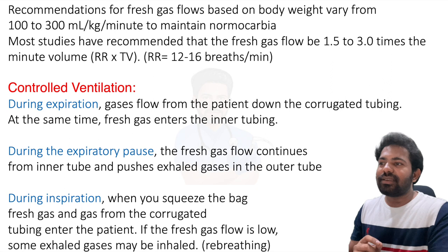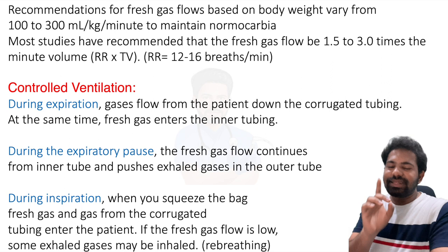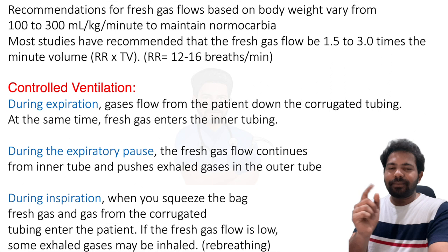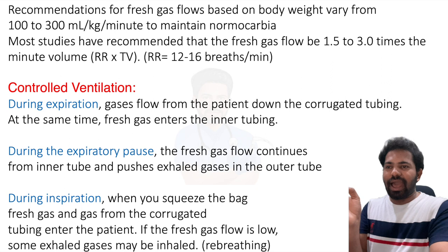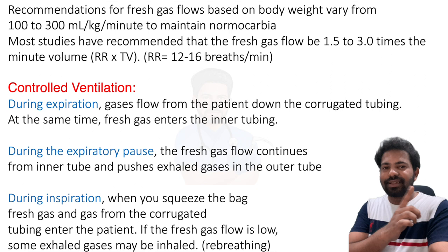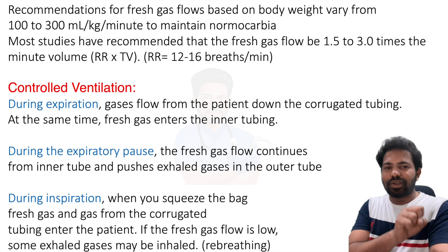During controlled ventilation, when the patient expires, gases flow from the patient down the corrugated tubing while fresh gas continues entering the inner tube. Throughout surgery, as long as oxygen is connected, there is a continuous flow of inspired gases through the inner tube to the patient. During expiration, the expired gases are present in the corrugated tube.